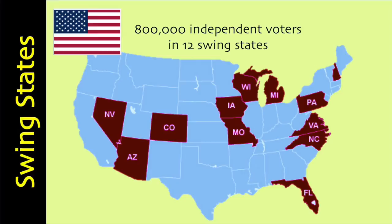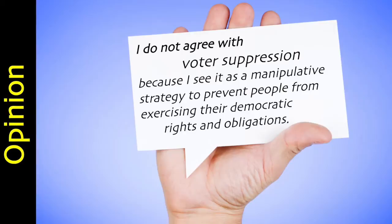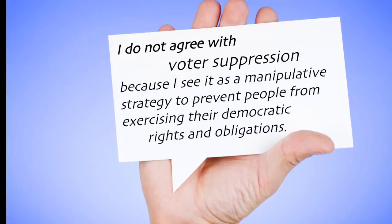A relatively small number of independent voters in key swing states decide the outcome of the U.S. presidential election. By some estimates, there are about 800,000 truly undecided independent voters in the battleground states. Factor in a total of a billion dollars in ads, and that means campaigns are spending about one thousand dollars per persuadable voter. I personally do not agree with voter suppression because I see it as a manipulative strategy to prevent people from exercising their democratic rights and obligations. I see elections turning into gamesmanship — gaming the system, abusing the rules meant to protect the system in order to manipulate it for a desired outcome. But this is done and we have to be aware of it.